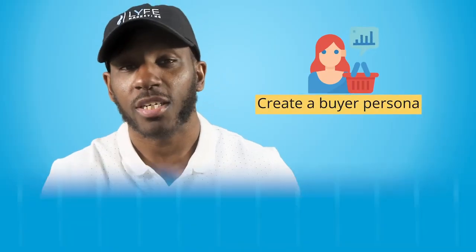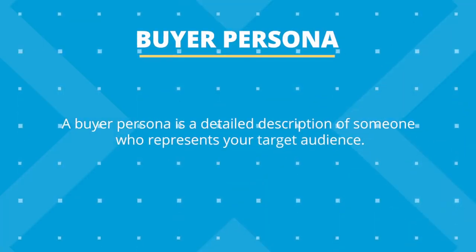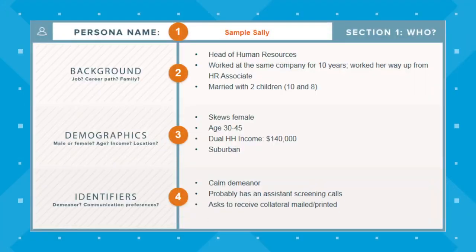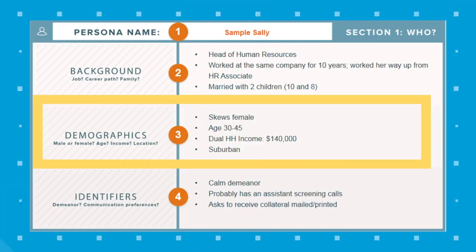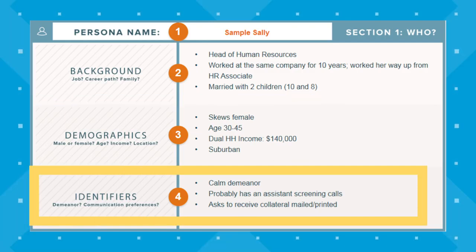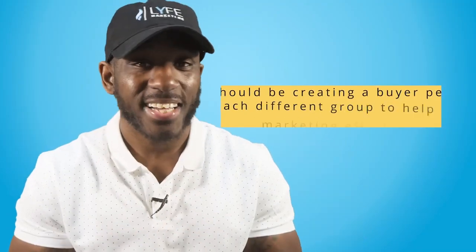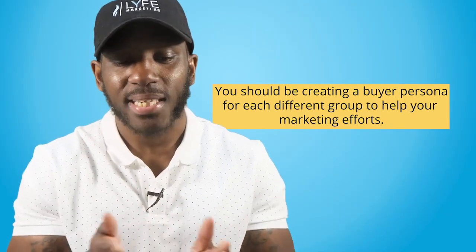The best way to use this information when creating content is to create a buyer persona. A buyer persona is a detailed description of someone who represents your target audience — not a real person, but one that embodies all the characteristics of your best real customers. This person will include audience details like age, location, and income, as well as behavioral traits to help understand your audience's purchasing habits. Don't just stick to one buyer persona; you might find that you have different groups of people that purchase your products for different reasons, so you should be creating buyer personas for each and every group.